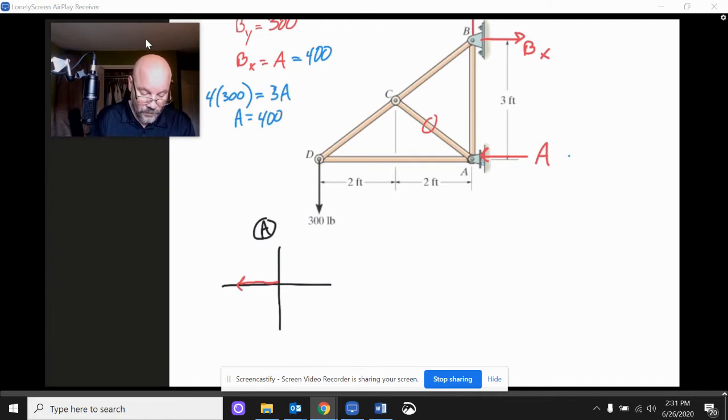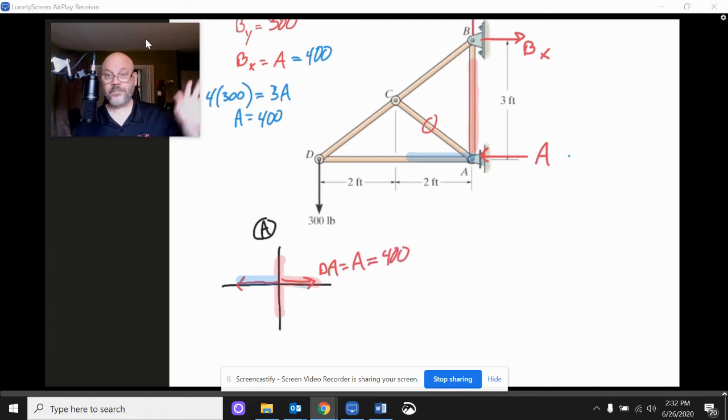You want to, here's our actual force A, just like this. And then we know that BA, which is this guy up here, is going to be coming down this way. And we know that AD is going to be coming this way. So what do we learn about that? We learn right away that DA is going to have to be pointed this way here. There's DA, and that's going to have to be equal to A, which we found already to be 400. That's it. It's done.